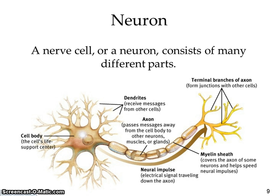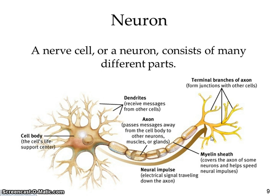Please make sure you know a neuron and its different parts. The cell body is the life support system of the neuron — it's how the neuron maintains its life. Dendrites are like little hands reaching out to grab messages from other neurons passing messages along. The axon passes a message away from the cell body to other neurons, muscles, or glands throughout your body, via a neural impulse — an electrical charge that travels down the axon.